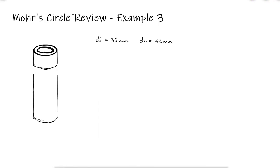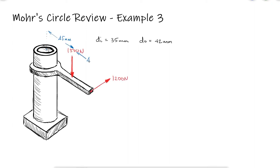A pipe with an inner diameter of 35 millimeters and an outer diameter of 45 millimeters is subjected to two forces. What are the principal stresses and the maximum shearing stress at point B?